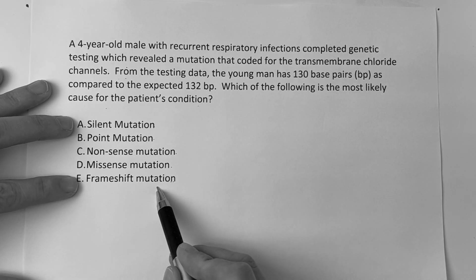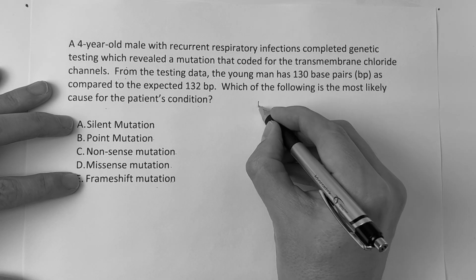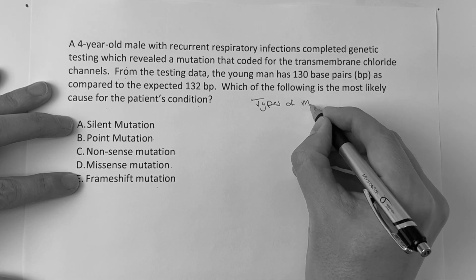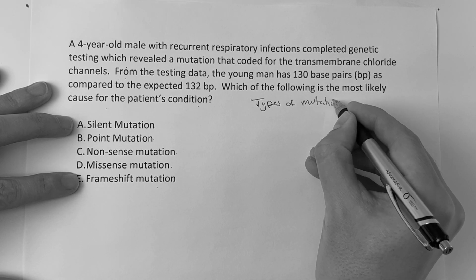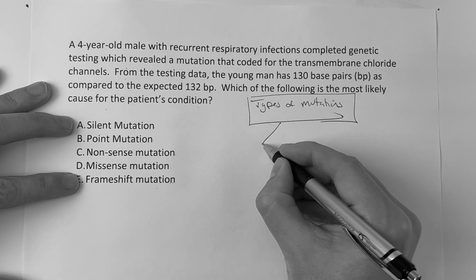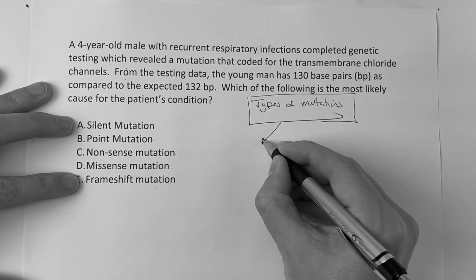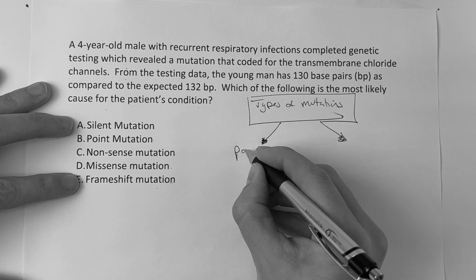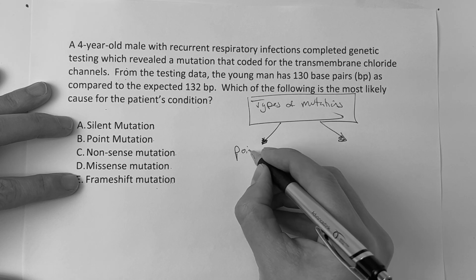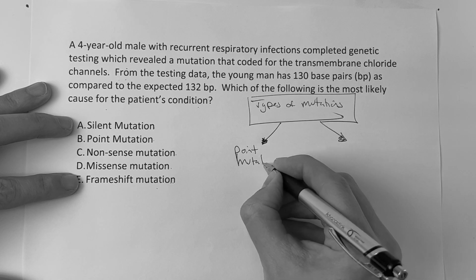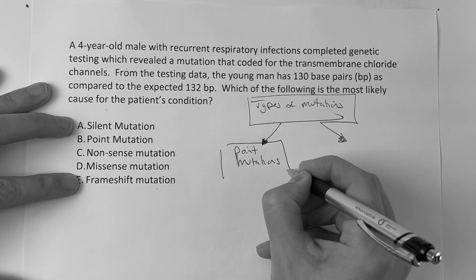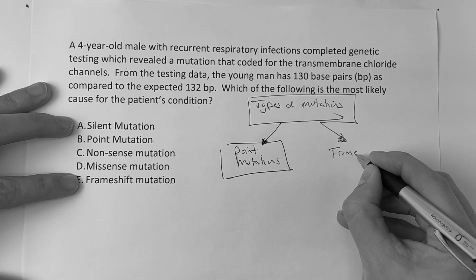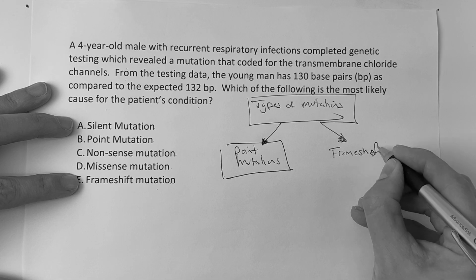To answer a question like this, you have to know the types of mutations. There are two main categories: point mutations and frameshift mutations.